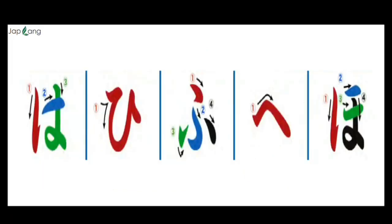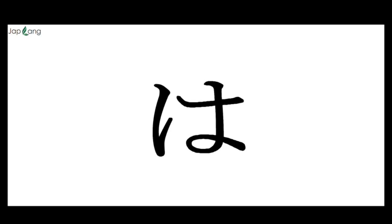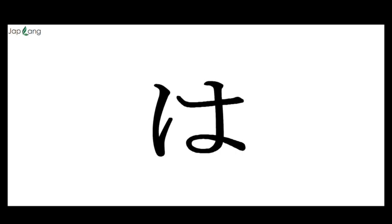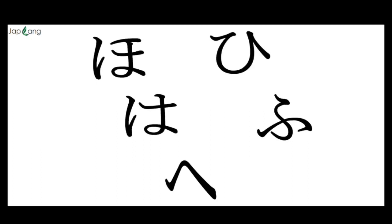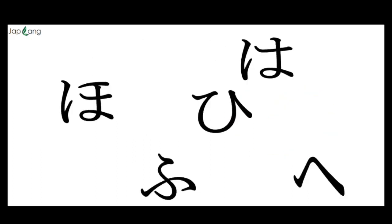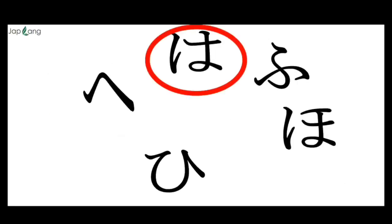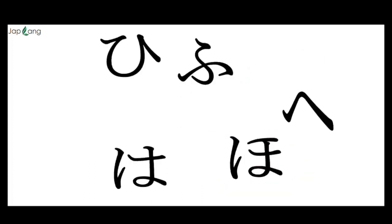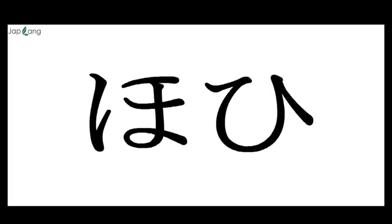So what we learned is: HA, HI, FU, HE, HO. Let's review and quiz: HA, HO, HE, FU, HO, HA, FU, HE, HE. Now tell me what each is: FU, HO, HA, HE, HE, HO, HE.